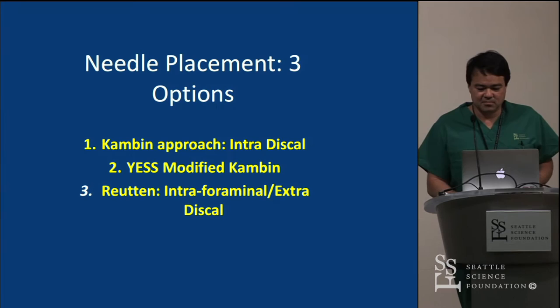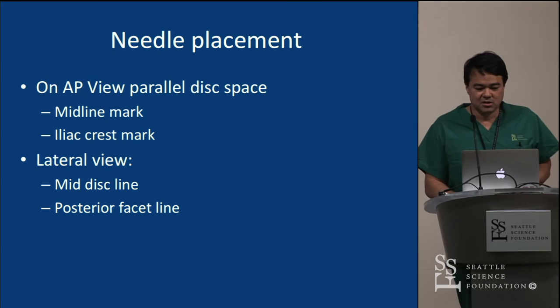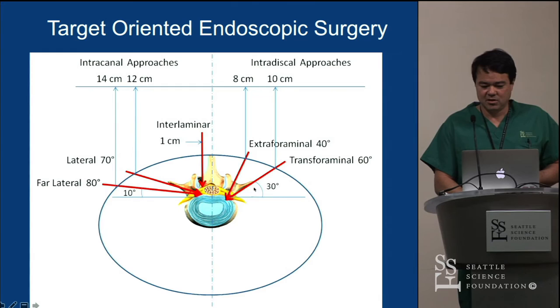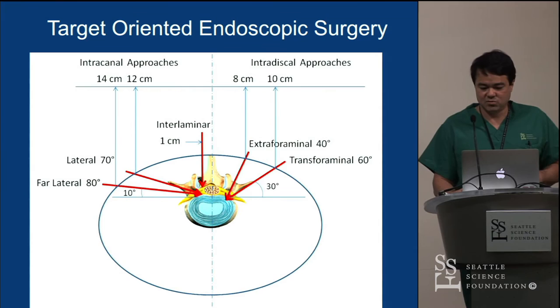Needle placement — three options: Camden's approach, a modified Camden's approach, and an interforaminal approach. You can also go posterior interlaminar, though that's not the focus of today's course. For different problems, your needle placement angle is going to be different. A large paracentral disc — more horizontal; smaller contained — more vertical. The more vertical approaches are used for fusion. We can do fusions in the lumbar spine from L1 down to S1.